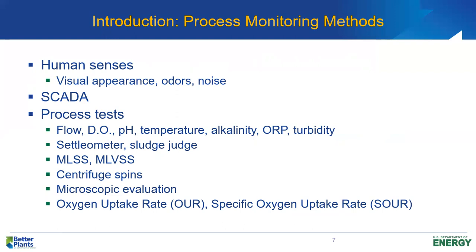The process tests we use include flow rates, dissolved oxygen levels, pH, temperature, alkalinity, ORP, settleometer, sludge judges, mixed liquor suspended solids concentrations, microbial evaluation using a microscope, and OUR and SOUR. All of these are important tests that we use conjunctively to tell us what's going on in the activated sludge process. Each test is valuable and gives us information about the overall status of our process. We rely significantly on these data.